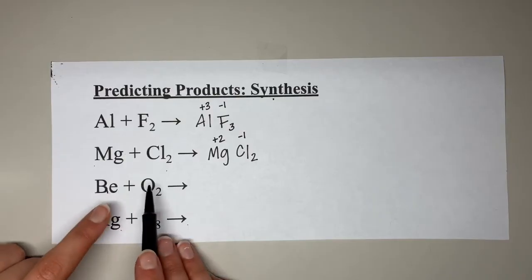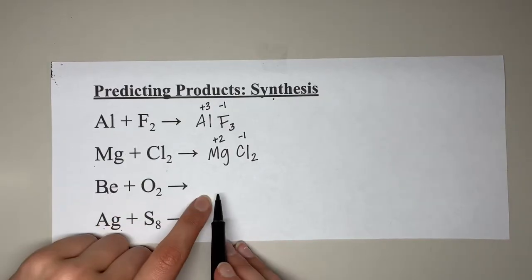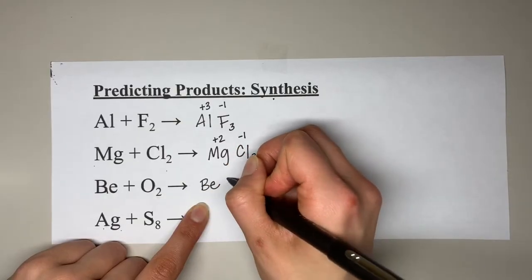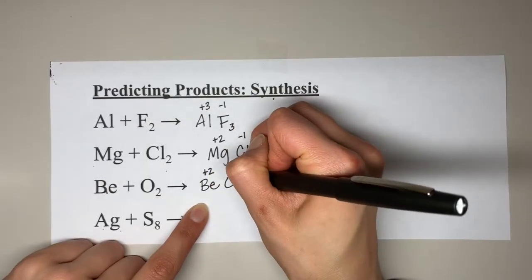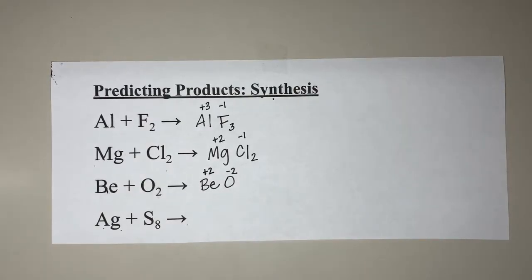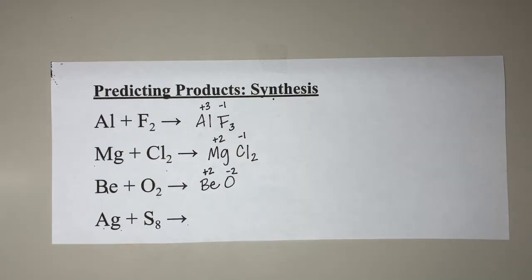Let's try the third one: beryllium reacting with oxygen gas. Our compound is going to contain beryllium and oxygen. Beryllium is a +2 charge and oxygen is a −2. If you're confused where these charges come from, we're following the pattern on the periodic table: Group 1 elements have a +1 charge, Group 2 a +2 charge. Group 17 (chlorine and fluorine) has a −1 charge, Group 16 (oxygen) has a −2 charge, Group 15 (nitrogen and phosphorus) has a −3 charge, and aluminum is a +3.